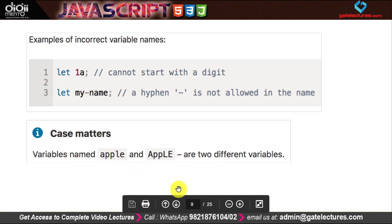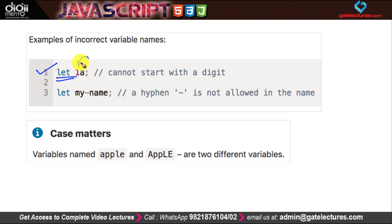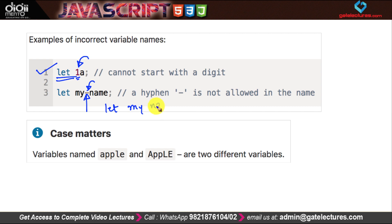Here are some examples of incorrect variable names. The first is 'let 1a' — this variable name starts with a digit, which is why it is not correct. The second case uses a hyphen symbol in the variable name, which is not allowed. Also, spaces are not allowed in variable names — for example, 'let my name' with a space is also incorrect.